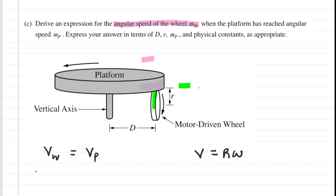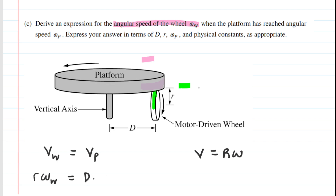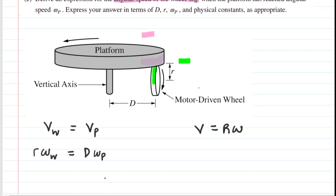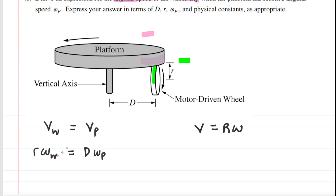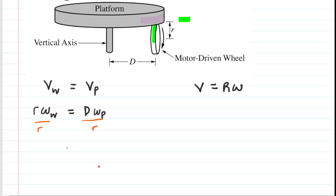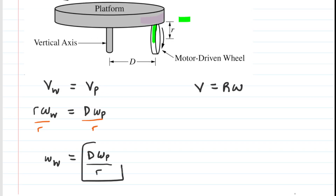Since linear speed equals radius times angular speed, we replace the linear speeds with their angular counterparts. For the wheel: lowercase r times omega sub W. For the platform: capital D times omega sub P. Solving for omega W, we divide both sides by lowercase r, giving us omega W = D times omega P divided by r. This is the expression for the angular speed of the motor-driven wheel.